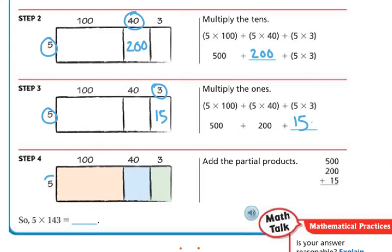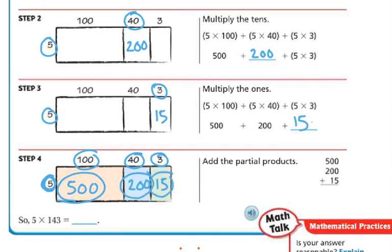So in the first one we did 5 times 100, which was 500. Then we did 40 times 5, and this was 200. Then 5 times 3, which is 15. So these are my partial products: 500, 200, and 15. If I add these partial products, I get the answer to 5 times 143. 5 plus 0 plus 0 is 5, 1 plus 0 plus 0 is 1, 5 plus 2 is 7. So the answer is 715.